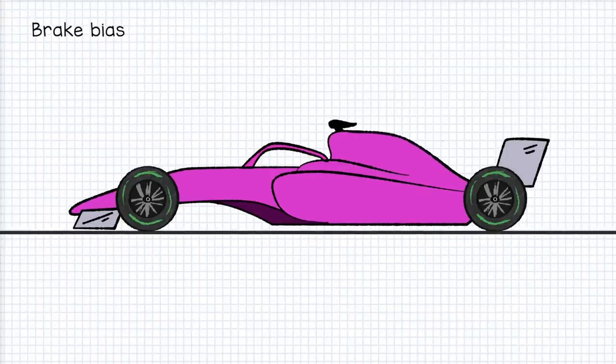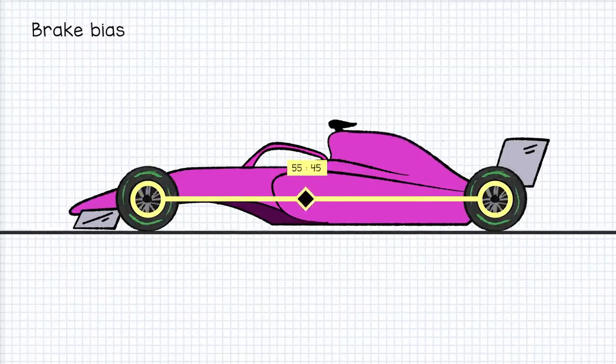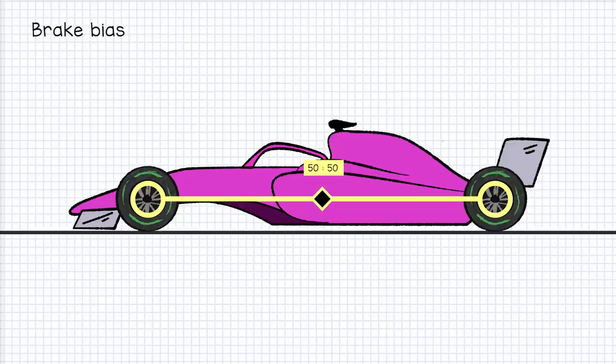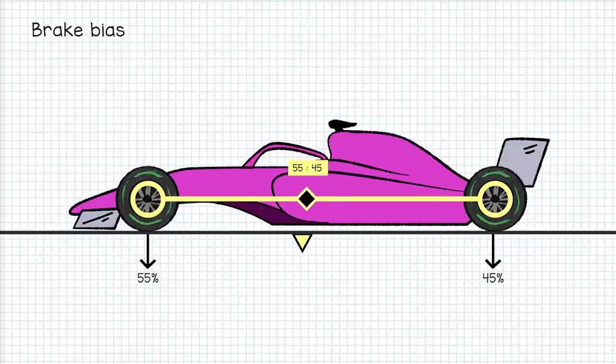Brake bias or brake balance sets how the braking force is shared between the front and rear brakes when the pedal is pushed. Ideally, you want each brake doing the exact amount of work necessary for the weight load it's managing. At rest, the F1 car's weight is distributed roughly 45-55, i.e. 55% of the weight is supported by the rear tires. But under heavy braking, the weight shifts forward to as much as 55-45. So you'll tend to end up setting a brake bias to about 55% frontwards.